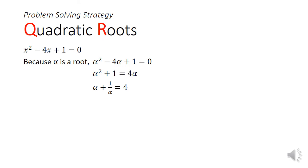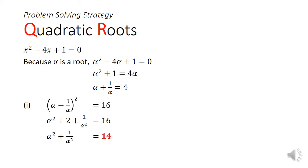Now since alpha is a root, we can substitute x to be equal to alpha. Rearranging the quadratic equation, we can form alpha plus 1 over alpha to give us 4. For part 1, we can square both sides of this equation. On the left side, alpha plus 1 over alpha squared will give us alpha squared plus 2 plus 1 over alpha squared, and that will give us 16 on the right-hand side. Shifting the 2 over to the right-hand side, we will get alpha squared plus 1 over alpha squared to give us 14, which is the answer for part 1.